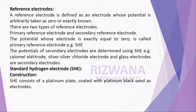Secondary electrodes are defined by combining them with the standard hydrogen electrode. When an electrode is combined with the standard hydrogen electrode, whose potential is zero, it forms a complete cell. Since the potential of the standard hydrogen electrode is zero, the cell potential equals the electrode potential. This potential remains constant for a long period of time, and these electrodes are used as secondary reference electrodes.